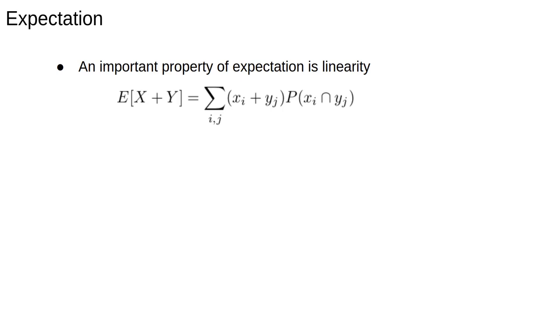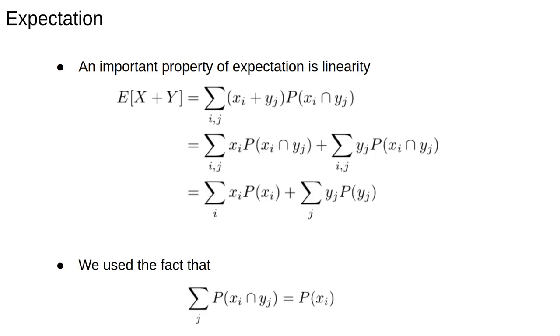First we write the definition of the expectation of the sum of two random variables. Then we separate the two terms into two separate sums. Next we use the important property that the probability to measure the value xi and any value of y is equal to the probability to measure xi alone.